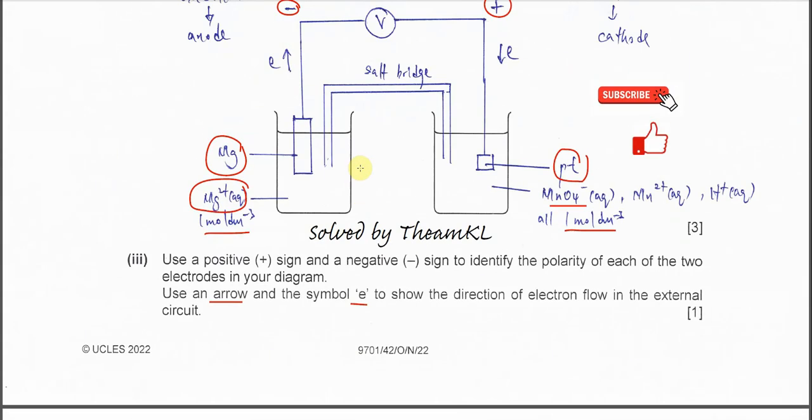Part 5: Construct an equation for the cell reaction. This is straightforward — get the two half-equations and make sure the number of electrons is the same. Multiply the permanganate half-equation by 2 to give 10 electrons, and multiply the magnesium half-equation by 5 to also give 10 electrons. Then combine both half-equations to get the overall cell reaction.